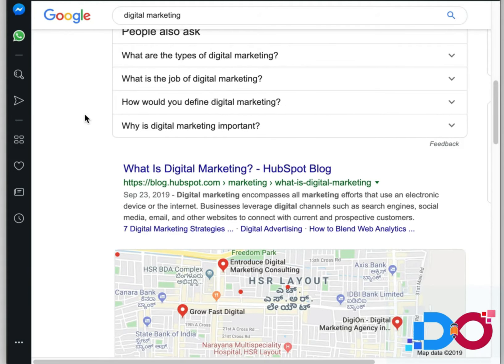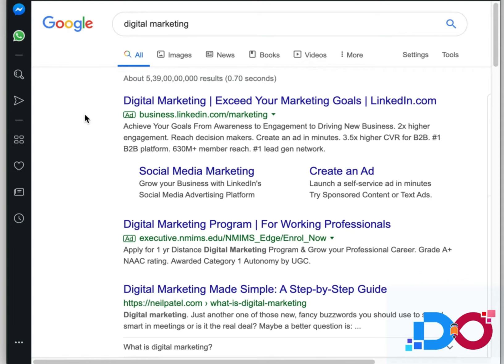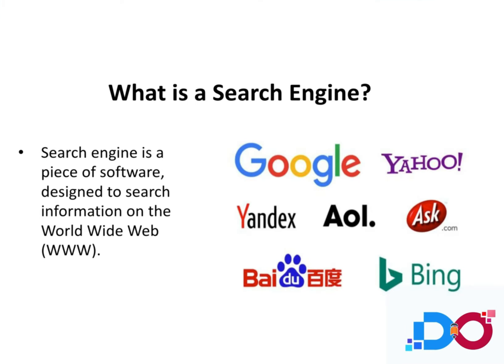Google is one of the most used search engines — almost 75% of the web uses Google. Let's understand how it works. First, what is a search engine? The World Wide Web is a service provided on the internet. If I want to find some information, there has to be some mechanism or software which allows me to do this.